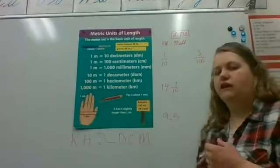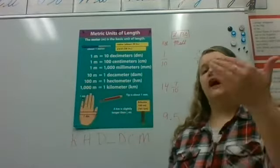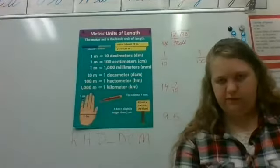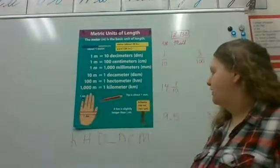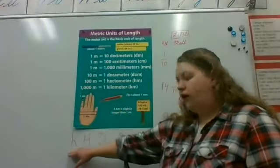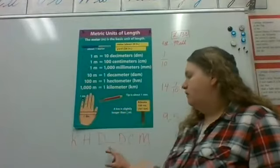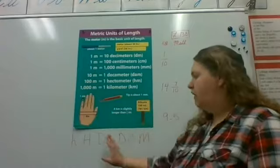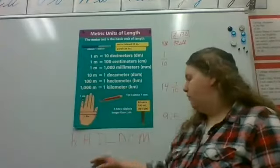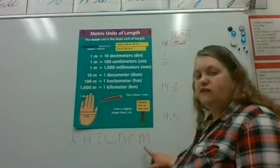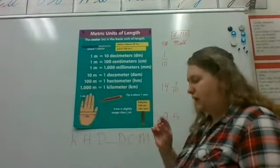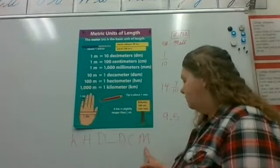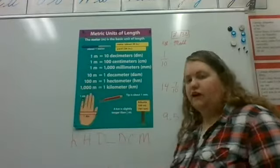A kilometer is slightly longer than half a mile. When you're driving and you see the half-mile markers, you can say we just went about a kilometer. Kilo means a thousand — it takes a thousand meters to equal a kilometer. Hecto means a hundred, deca means ten. And on the small side: deci takes ten, centi takes a hundred, and milli takes a thousand to make up a meter.